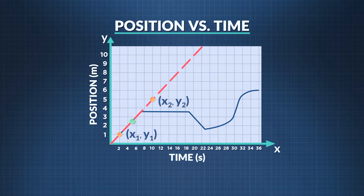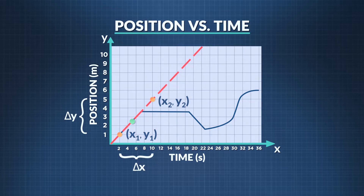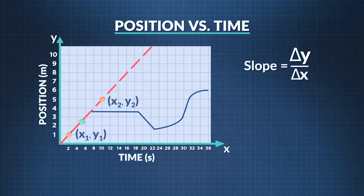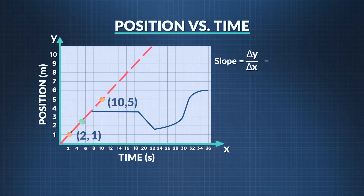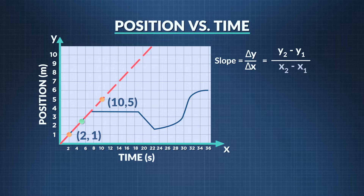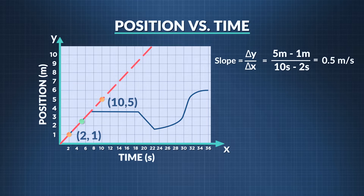The slope is represented by a change in position found on the y-axis, delta y, divided by the change in time found on the x-axis, delta x. Usually the slope will have units where the y units are on top and the x units are on the bottom. Plug the two points into the slope equation, which can be written as final position minus initial position divided by final time minus initial time. And that gives Summer's instantaneous velocity at five seconds, which is 0.5 meters per second.